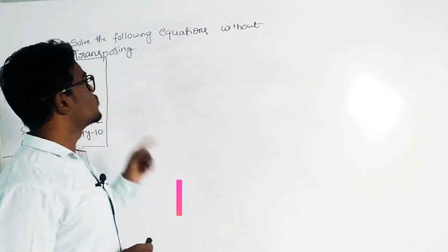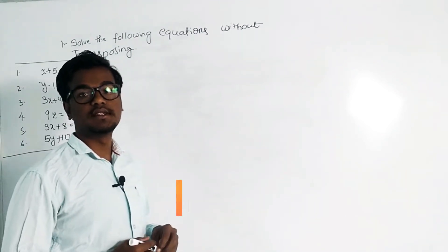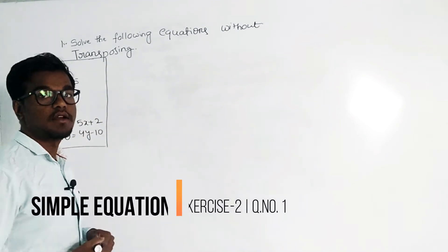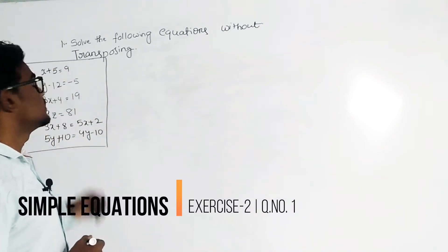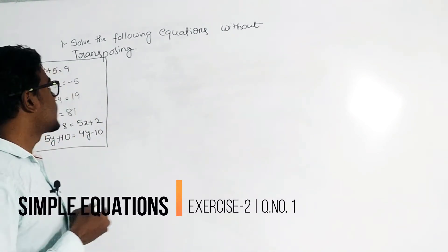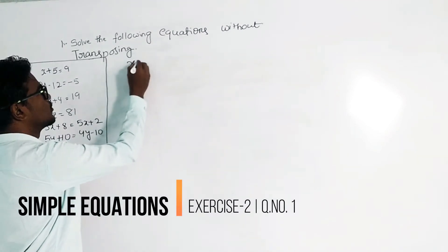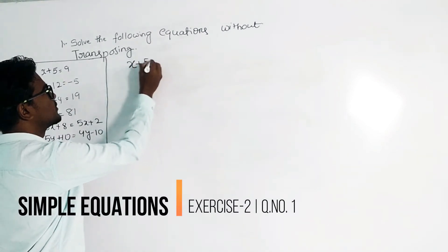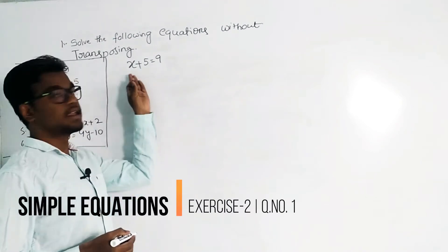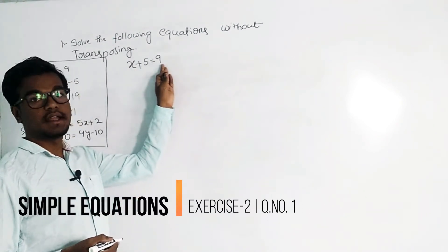Solve the following equations without transposing. Our first equation is x plus 5 equals to 9. Here, the left side has x plus 5 and the right side has 9.